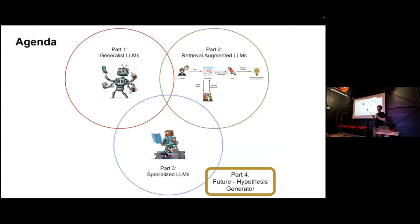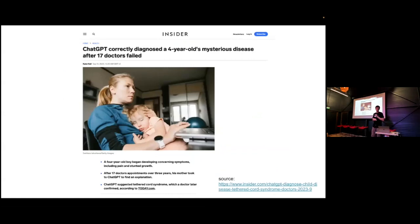The part I'm most excited about is not just making these models better at existing tasks, but new applications in the future. This news just came out: a mother who spent three years and consulted 17 doctors couldn't find a diagnosis for her child's rare disease. She described the symptoms to ChatGPT, which suggested a rare condition. A doctor then confirmed it. The point of this example is that these models could be used to generate hypotheses that none of us could surface.